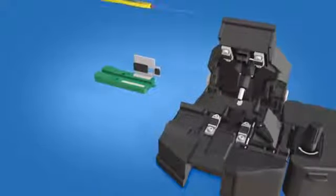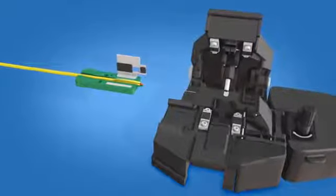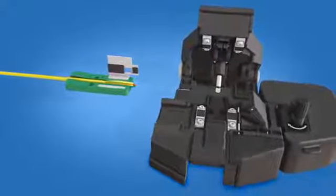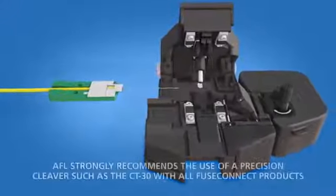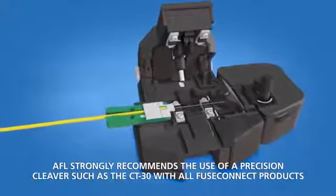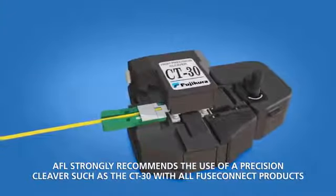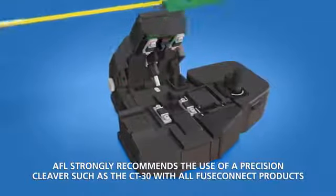Place the fiber into the 3 mm fiber holder with the end of the 900 micron coating at the end of the fiber holder. Close the fiber holder clamp. Load the fiber holder into a precision cleaver and cleave the fiber. Carefully remove the fiber holder with the cleaved fiber end from the precision cleaver.